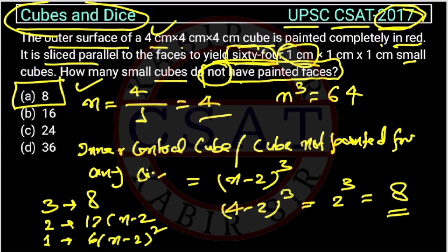These are also called central cubes, these are the middle cubes or edge cubes, these are corner cubes, and these are called inner central cubes or the cubes which are not painted at all. So, the formula for this is n minus 2 cube.